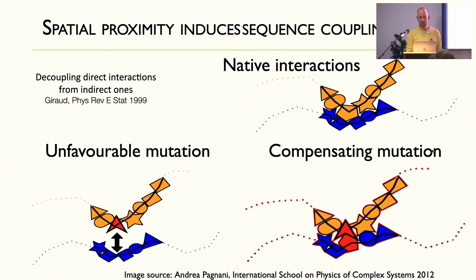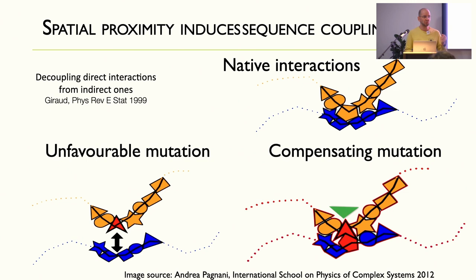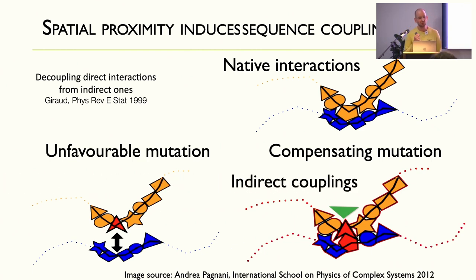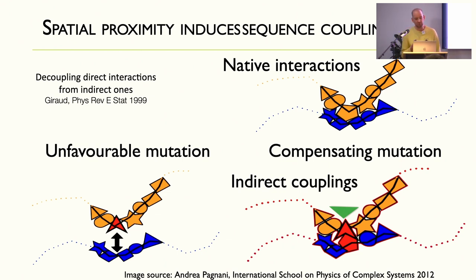This indirect coupling was compensated for using what's called Direct Coupling Analysis (DCA). That really changed the area of contact predictions — suddenly contact predictions became useful. This was Martin Weigt and others who started around 2008. Suddenly people could model the structure of proteins. Debbie Marks and Chris Sander and others pushed it further — you could actually do it for quite a lot of proteins.